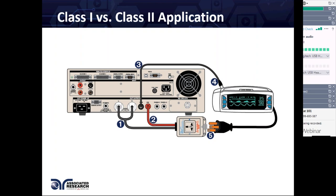Usually it's a series of tests: for a class 1 product, you start with continuity or ground bond, then move into high-voltage testing — Hypot and insulation resistance — and then move into leakage current testing. Depending on the application, you can use different configurations for Hypot testing.